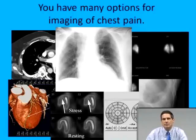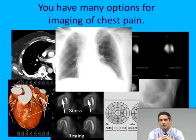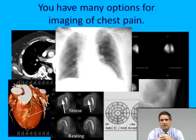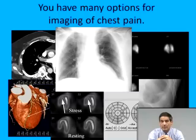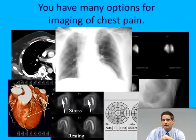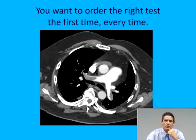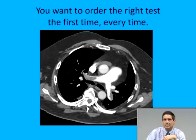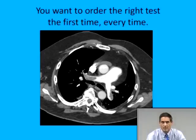You have a lot of options for imaging chest pain, including CT, plain films, nuclear medicine studies of the lungs such as the ventilation-perfusion study, nuclear medicine studies of the heart such as the myocardial perfusion study, plain films of the ribs, and CT angiography of the coronary arteries. There are many different kinds of studies you can do for patients with chest pain, and you want to order the right study the first time every time. My job today is to tell you what study to order for your patient with chest pain.